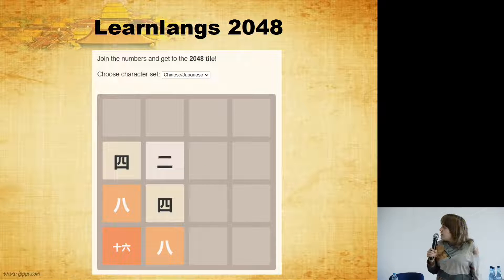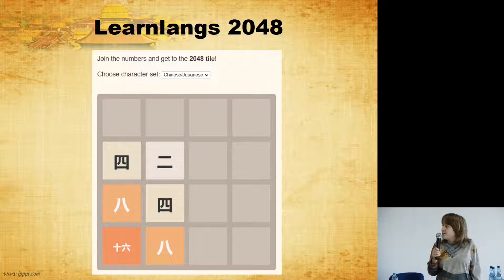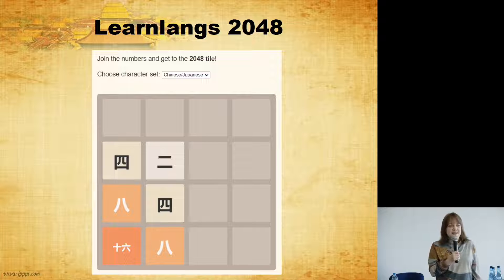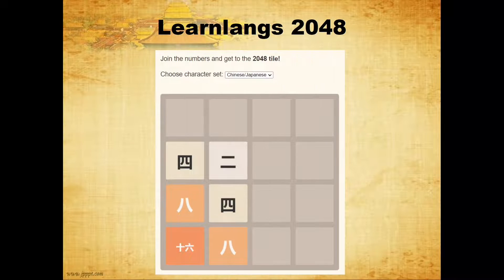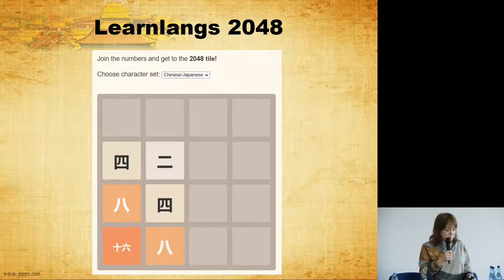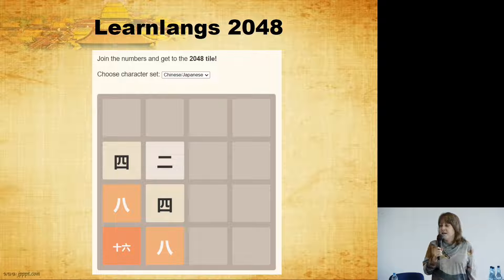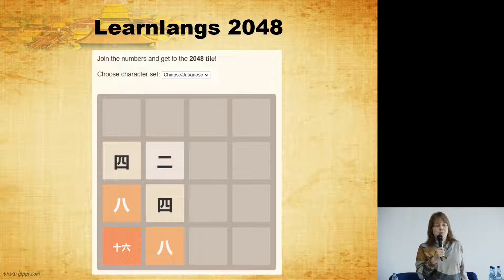You can also use a game I developed based on 2048 — the game where you try to get the number 2048 on one of those little squares. I created a version with different character sets: you can play with Chinese-Japanese numbers, Thai numbers, Arabic numerals, whatever language you want to learn. Just go to learnlangs.com/2048 and you can play with these different numbers and learn them in foreign scripts.